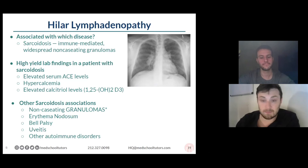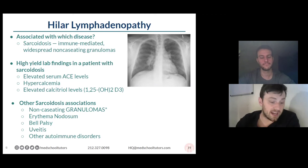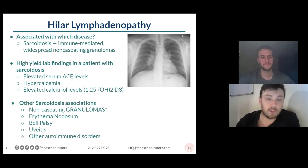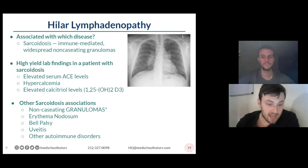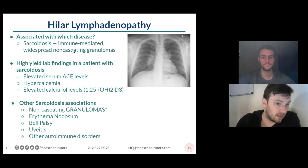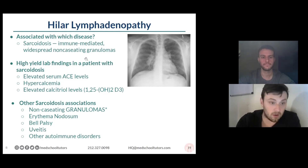Erythema nodosum is back for more fun — also Bell's palsy, anterior uveitis, and other autoimmune disorders. Don't forget your classic associations: African-American women in their 30s, 40s, 50s. If you see someone who had a first-degree relative with lung disease at a very early age, think very strongly about sarcoidosis. In real life, sarcoid can do all sorts of things — cardiac sarcoid, pulmonary sarcoid — it's unfortunately a very tough disease to treat.